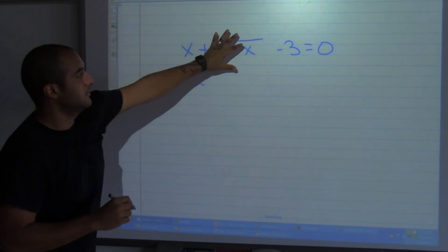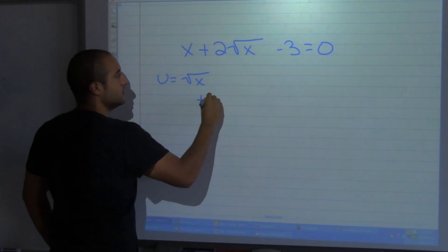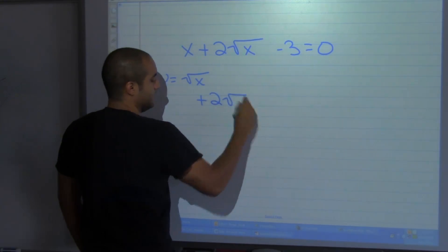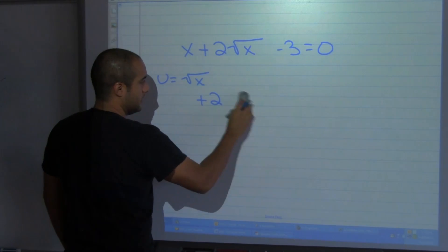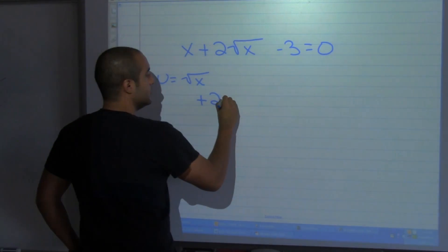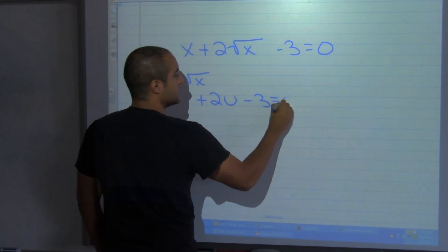That would mean that this term now looks like this: plus 2u minus 3 equal to 0.